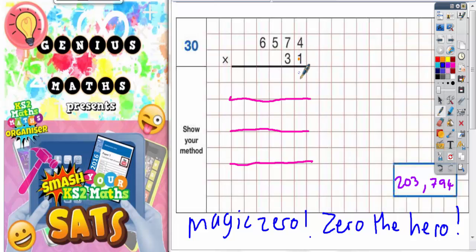So one lot of four would be four, one lot of seven would be seven, one lot of five would be five, one lot of six would be six. And then you need to account for about thirty. So you put your magic zero in. And three lots of four is twelve. Put the two in, carry the one. Three sevens are twenty-one, plus one is twenty-two. Put the two in, carry the two. Three five is fifteen, plus the two is seventeen. Put the seven in, carry the one. Three six is eighteen, plus the one is nineteen.